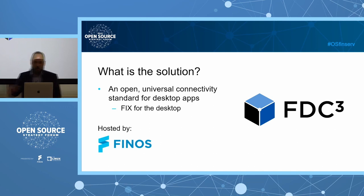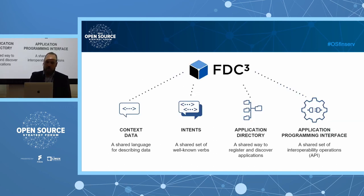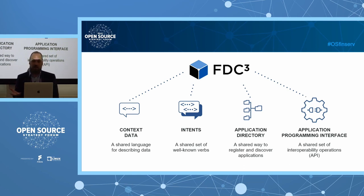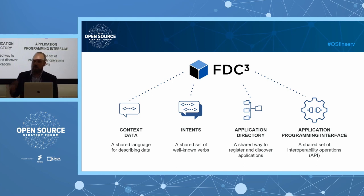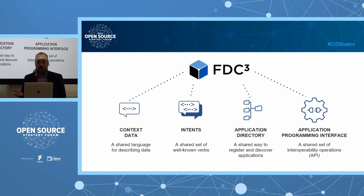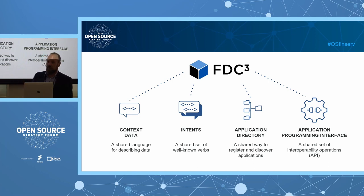FDC3 is built on four key concepts, often called the four pillars. First, a specification for context data — the standard for message content. Second, a set of intents — verbs or actions with a predefined agreed meaning, like 'view a chart' or 'view an analysis.' Third, an Application Directory standard used as a registry of available desktop applications and the intents they support. Fourth, the Desktop Agent API — a shared interface that can be implemented and used by many different app vendors.